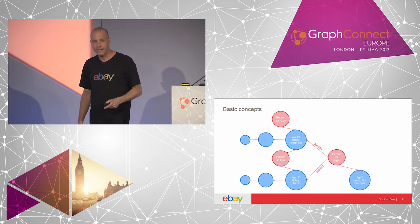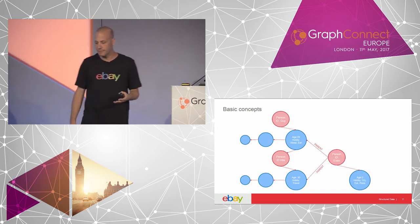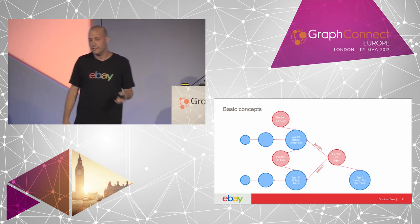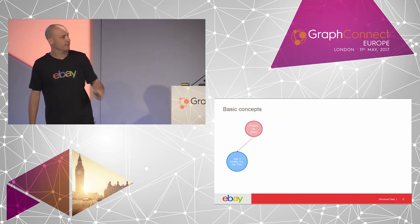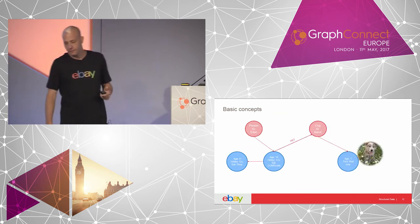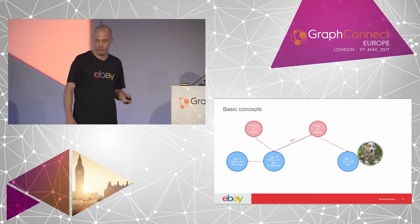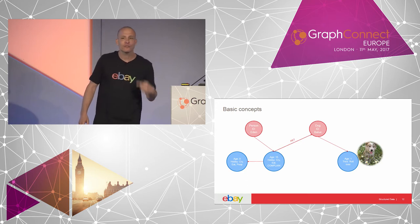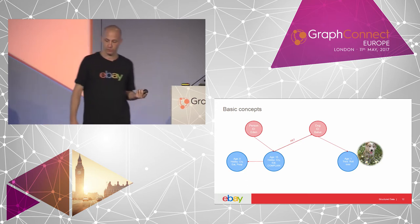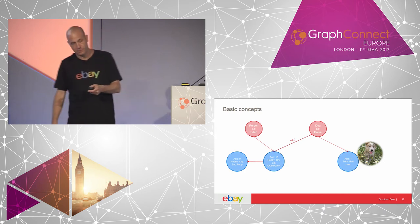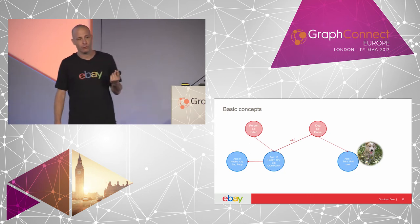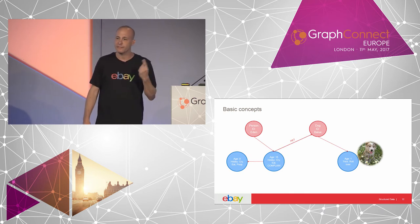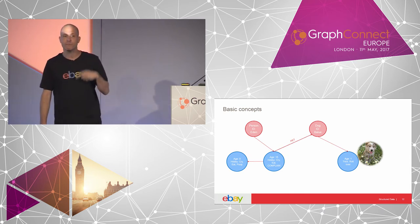Time moved on and we have another entity — our son, our first one, Eden. He has a state: he likes to cry, eat, and poop, exactly like his father at that age. And it keeps evolving — now he's 15, he likes to eat and complain. He's also related to another entity of type dog, who likes to roll over. So basically, you can see how we model our data: every entity is composed of an entity node and a state. You can connect entities of the same type, and you can connect entities of different types.